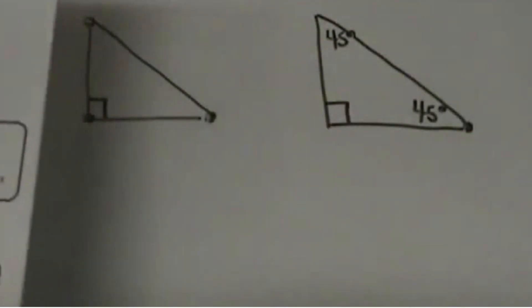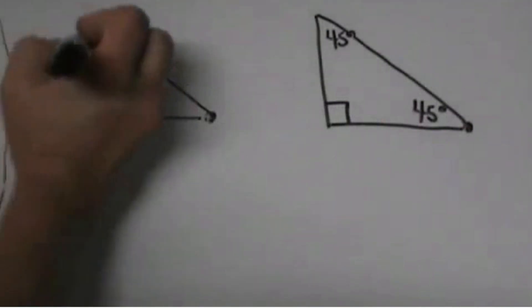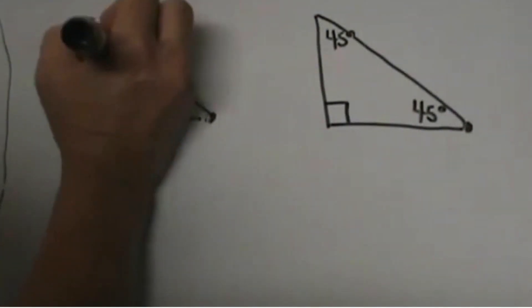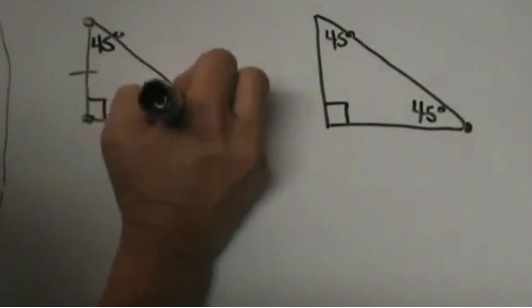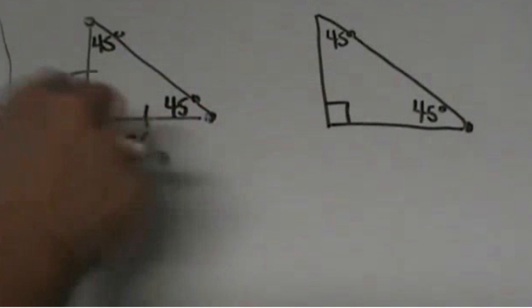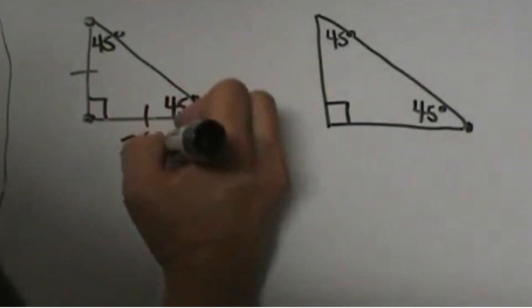In a 45-45-90 triangle, the legs are congruent. It is an isosceles triangle, so the legs are congruent. The symbol for congruent is an equal sign with a wavy thing, or you can write in the word congruent.